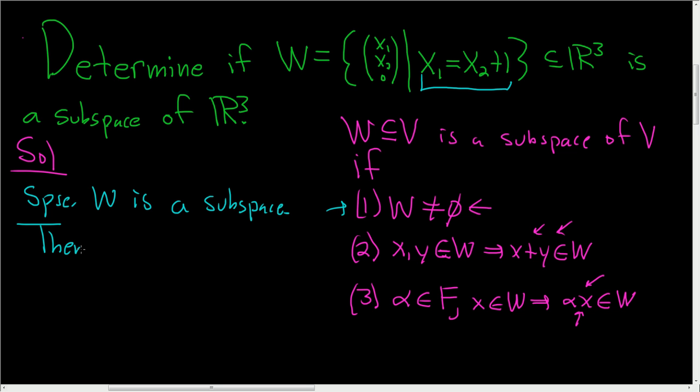Then what does that mean? Well, if it's a subspace, it's not empty. So then by one, there exists some X in W. By three, we'll note zero is a real number, X is in W.